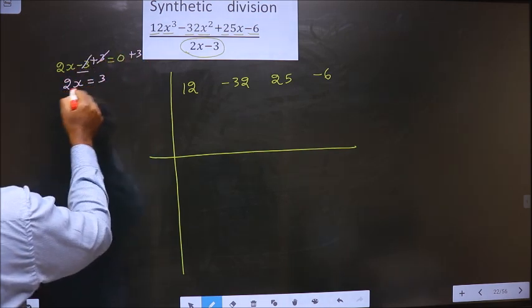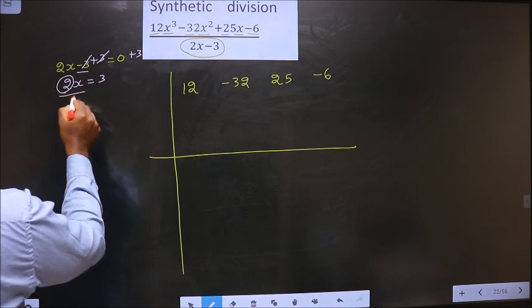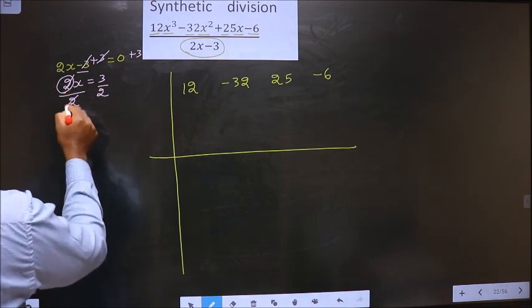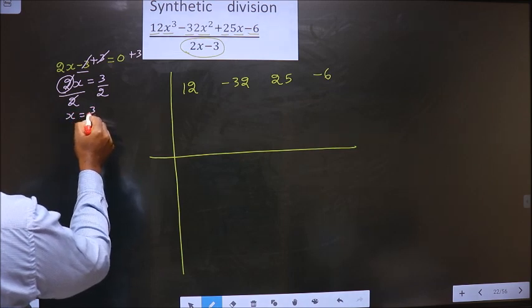You get 2x equal to 3. Now to remove 2, you divide by 2. You get x equal to 3 by 2.